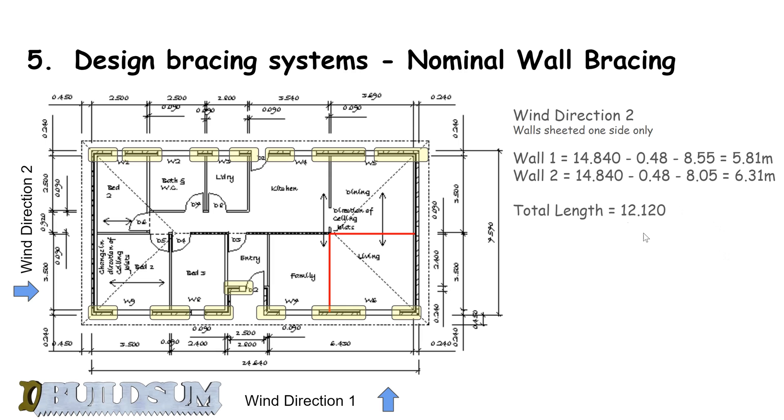This gives me a total length of those walls of 12.120 meters. We times that by our bracing capacity for nominal bracing single-sided, which is 0.45, and that gives me 5.45 kilonewtons of bracing in wind direction 2 for single-sided.